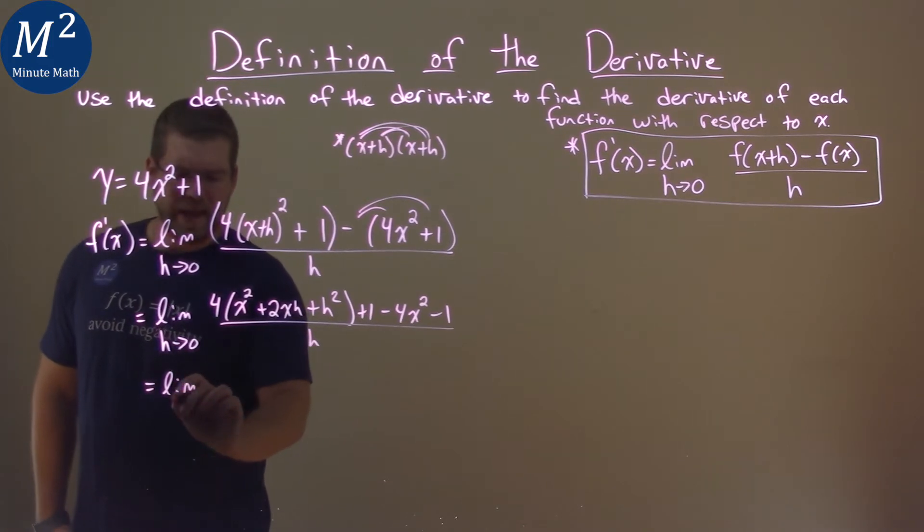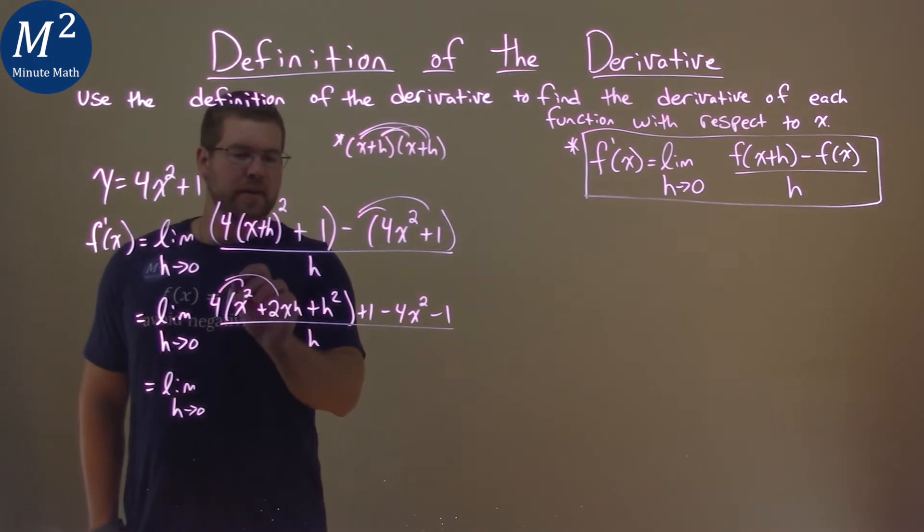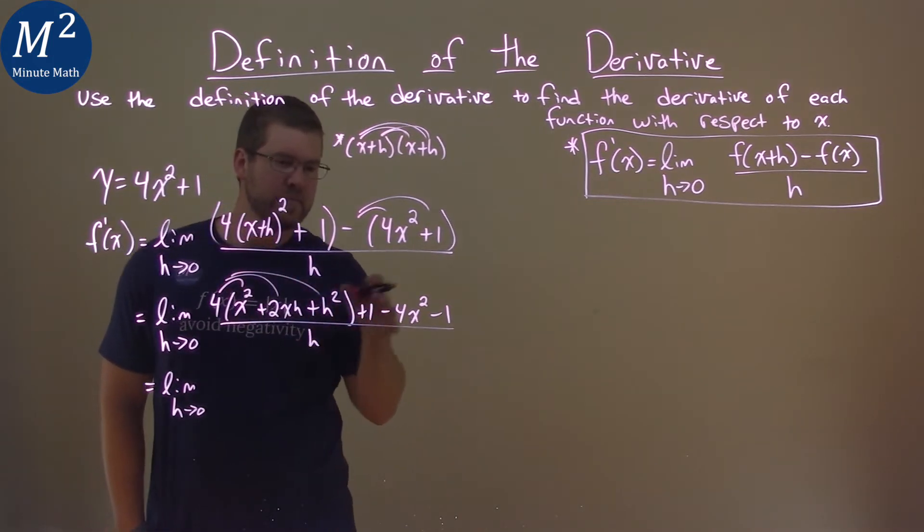We have the limit as h approaches zero here. Now what I like to do is distribute this part here out. Let's try and get as much as we can and then we can cancel some stuff.